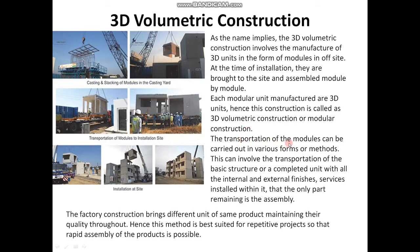The transportation of the modules can be carried out in various forms or methods. This can involve the transportation of the basic structure or a completed unit with all the internal and external finishes and services installed, such that the only part remaining is the assembly of the 3D modular units. The factory construction maintains consistent quality throughout; hence, this method is best suited for repetitive projects so that rapid assembly of the products is possible.